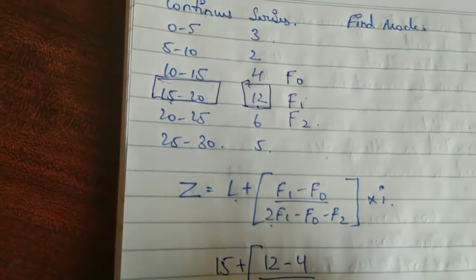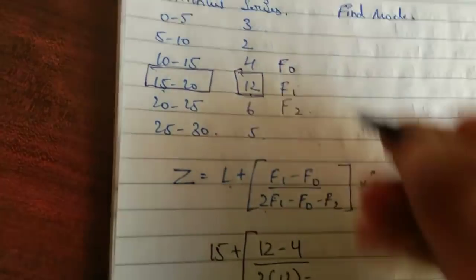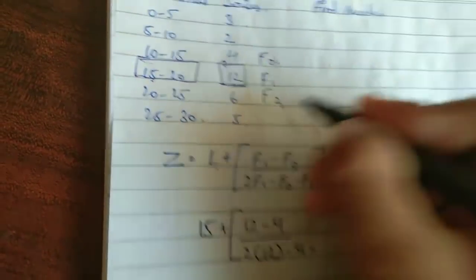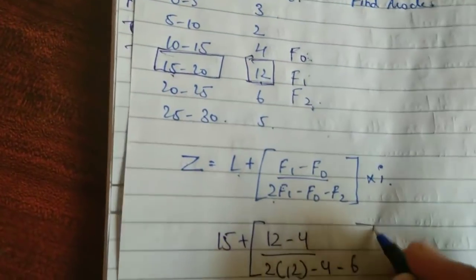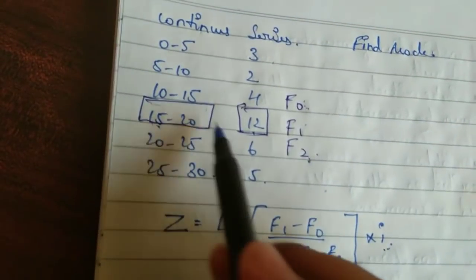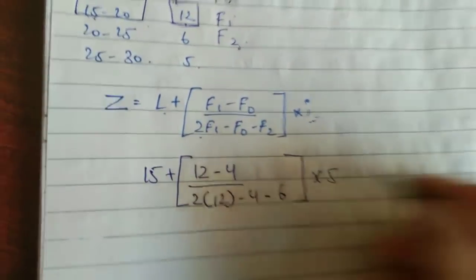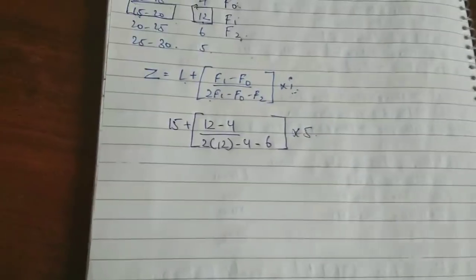2 into 12 minus 4 minus F₂ is 6. And what is the difference between here, 15 to 20 is 5 number, so into 5. Let's do it. Here you cannot do like you are doing in mode.